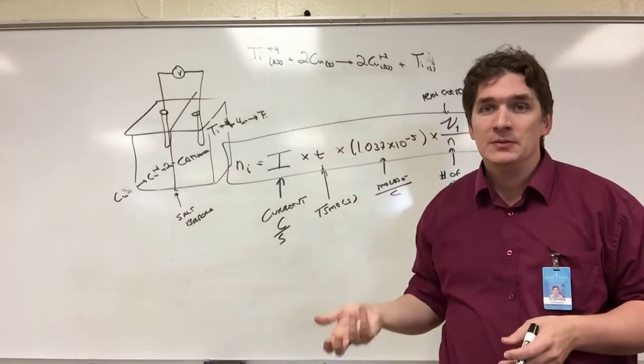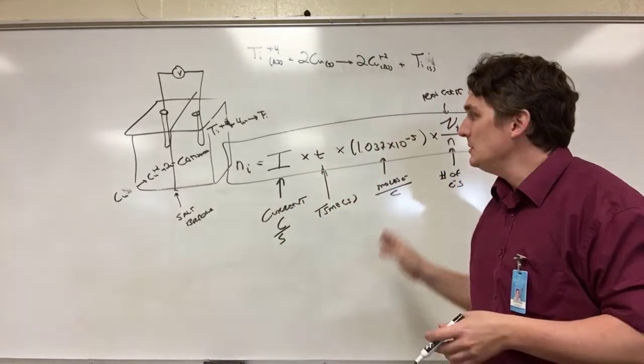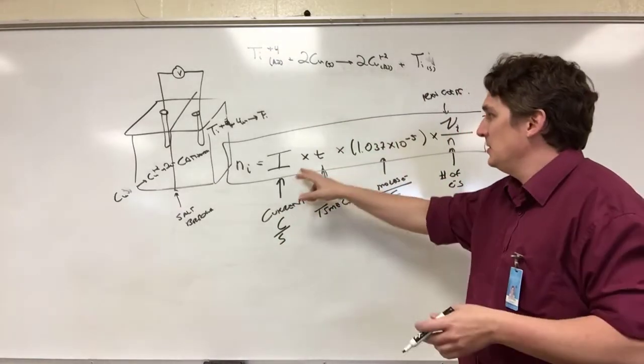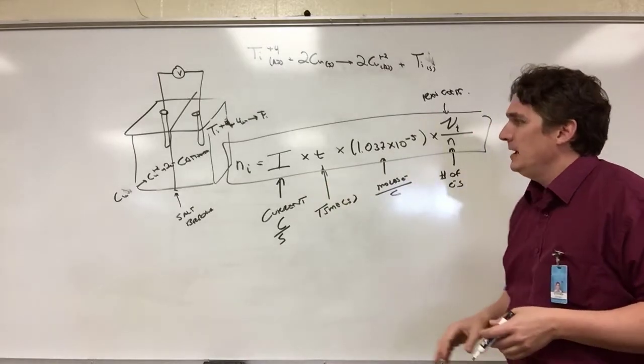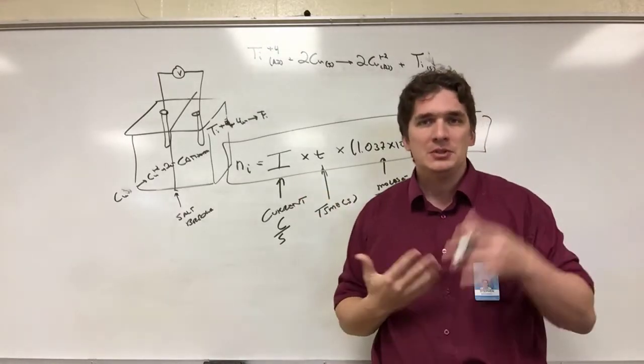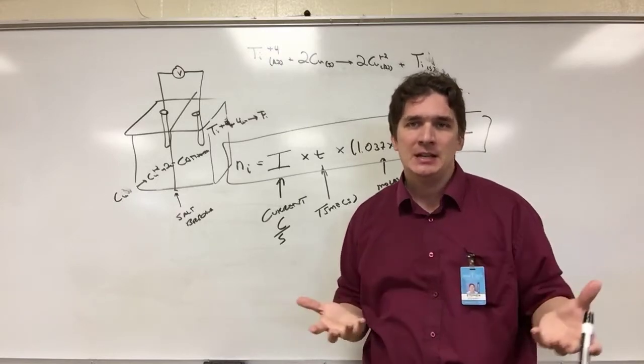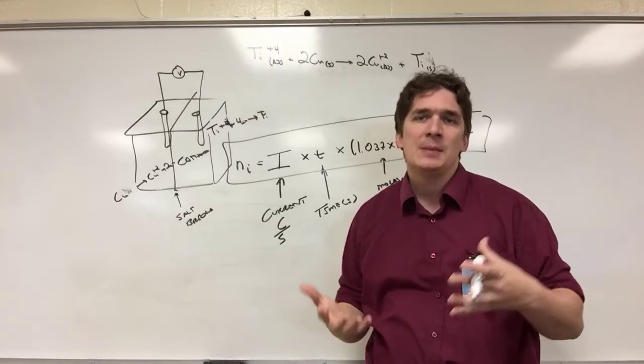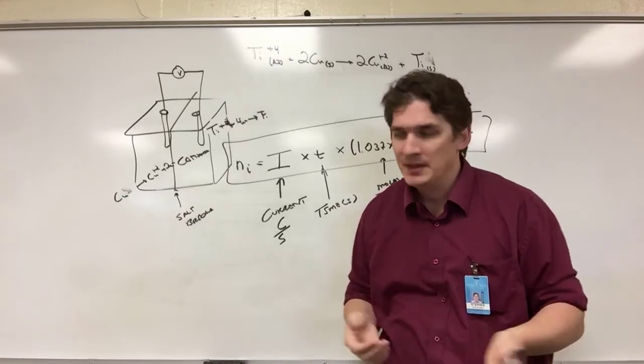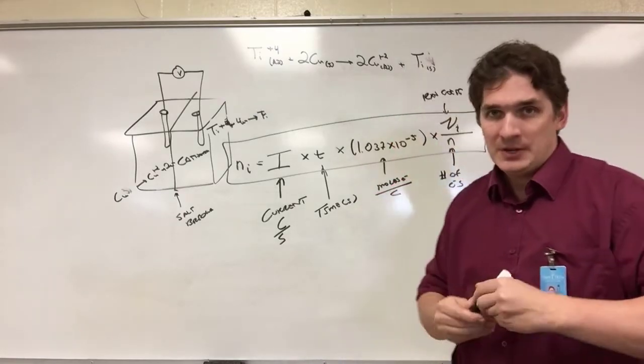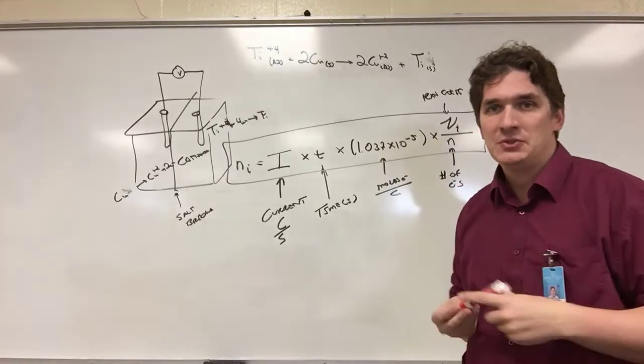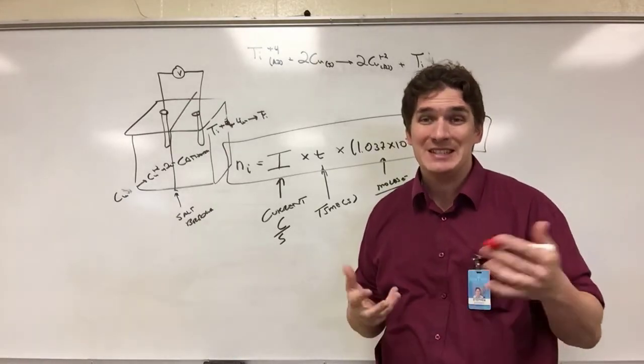How would we use this formula if we were given a problem? You can be asked for any part of this formula: current, time, or moles. So let's do a straightforward problem. If we run this reaction, how much titanium cathode is created and how much copper anode is removed? To do this we need some numbers, so let's say this was run with one amp of current for 60 seconds.